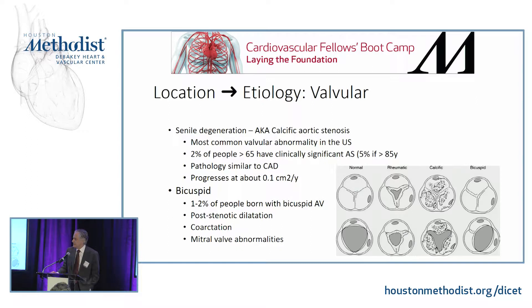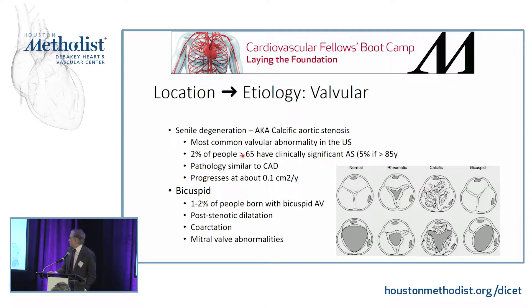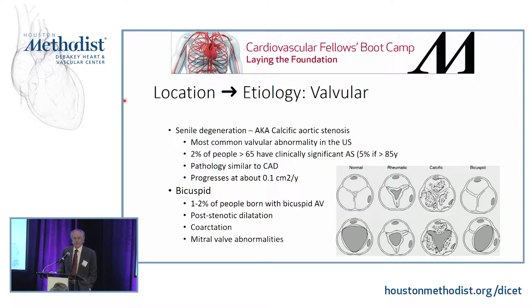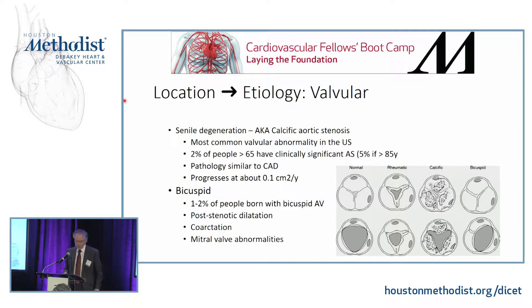Bicuspid disease is probably the most common congenital valvular disease, affecting about 1% to 2% of the population. It's associated with other congenital abnormalities such as coarctation of the aorta and mitral valve abnormalities. Patients with stenosis based on a bicuspid valve tend to have a higher incidence of post-stenotic dilatation than patients with other causes.